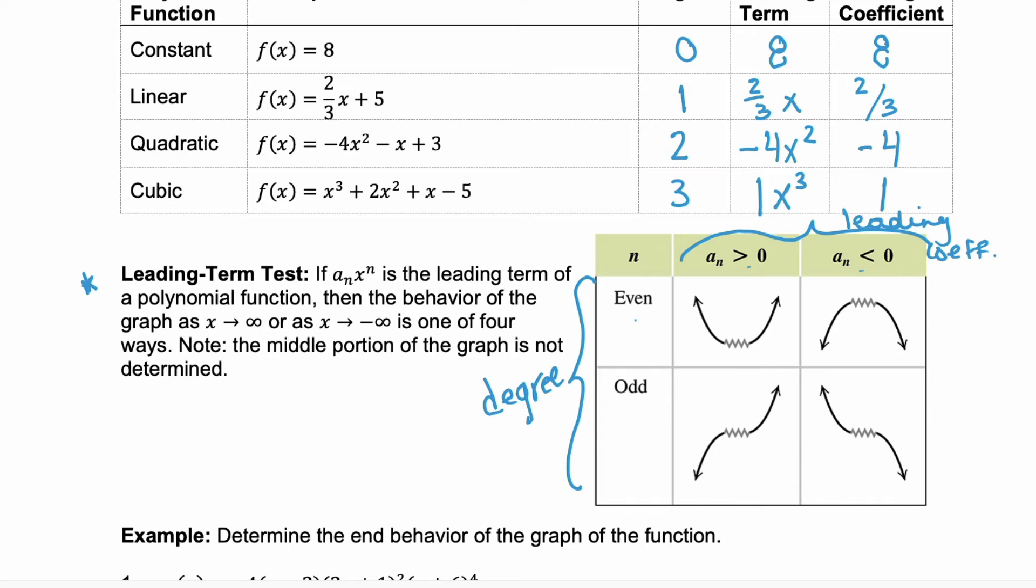So, if we have an even degree with a positive leading coefficient, we know that the left end and the right end are both going to point up. But if we have an even degree and a negative leading coefficient, then both ends point down. Notice the next one. This is an odd degree and a positive leading coefficient. The left end points down. The right end points up.